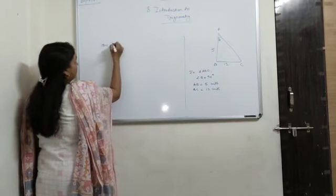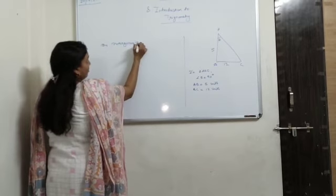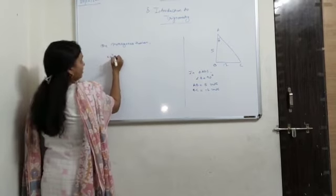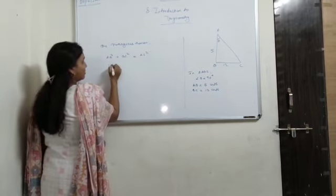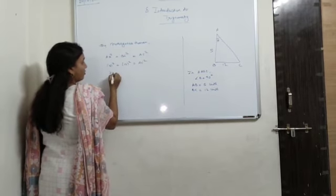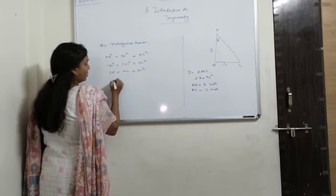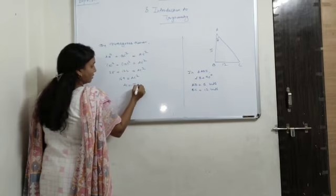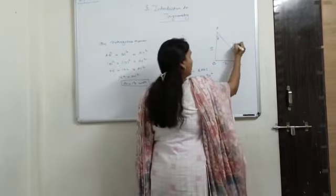Now, AB square plus BC square is equal to AC square. So here it is 5 square plus 12 square equal to AC square. So, 25 plus 144 equal to AC square. Therefore, 169 equal to AC square. So, AC here we got it as 30 units.